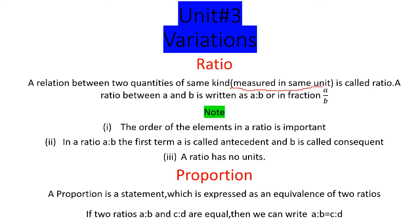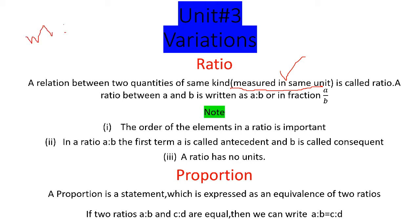Same kind سے مراد یہ ہے کہ وہ same unit میں measure کی جائیں۔ جیسے length کا unit meter ہے، time کا second ہے، weight کا kg ہے اور currency روپیز میں ہوتی ہے۔ اگر ایک چیز meter میں ہے تو دوسری چیز بھی centimeter، meter، decimeter، millimeter یا kilometer میں ہو — لیکن دونوں چیزیں length کی ہونی چاہیے۔